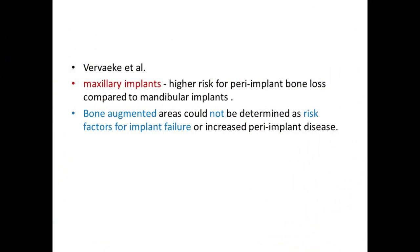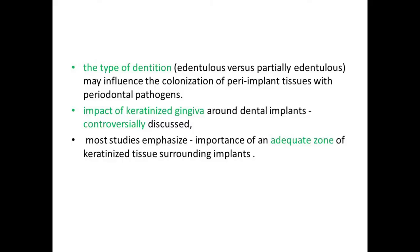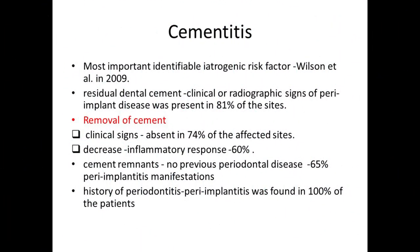Annual bone loss is about 0.16 mm per year in smokers, and osseointegration and oral hygiene around the implant are reduced. According to Berweke et al., maxillary implants are more prone to peri-implant disease than mandibular implants, and bone-augmented areas are also more prone. An adequate amount of keratinized tissue around the implant is important for proper oral hygiene maintenance. Cementitis — residual dental cement in the peri-implant area — leads to peri-implantitis in 81% of affected sites.